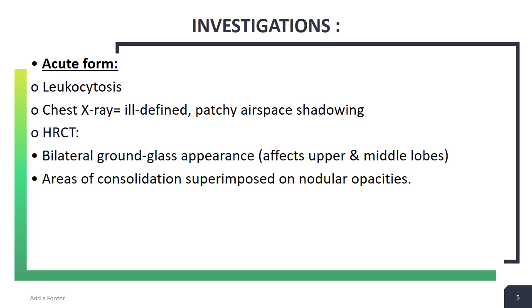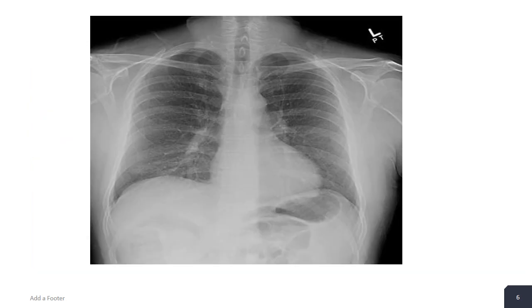Chest X-ray will reveal ill-defined patchy airspace shadowing, and the high-resolution CT scan will show bilateral ground glass appearance affecting the upper and middle lobes. Ground glass appearance is haziness on the chest X-ray that does not obscure the blood vessels or bronchi. There will also be areas of consolidation superimposed on nodular opacities.